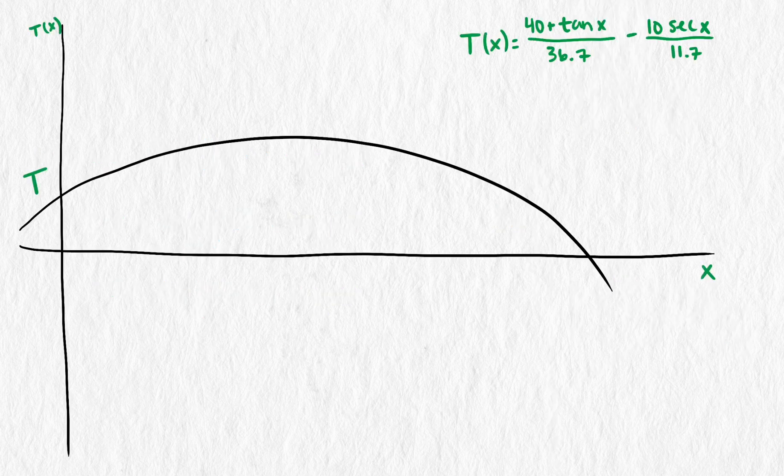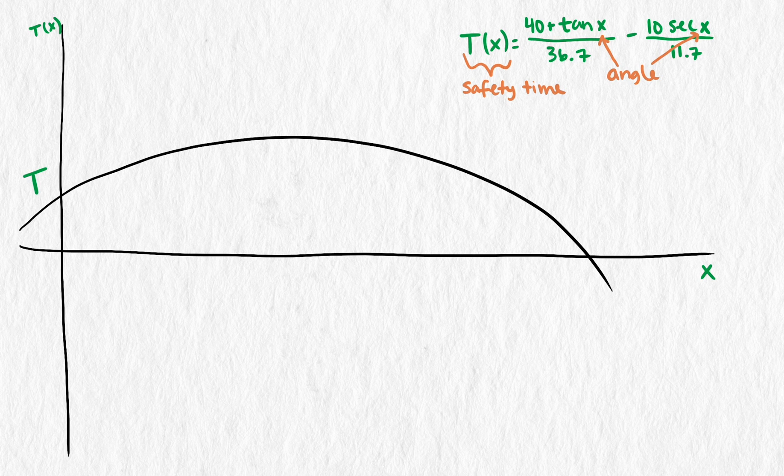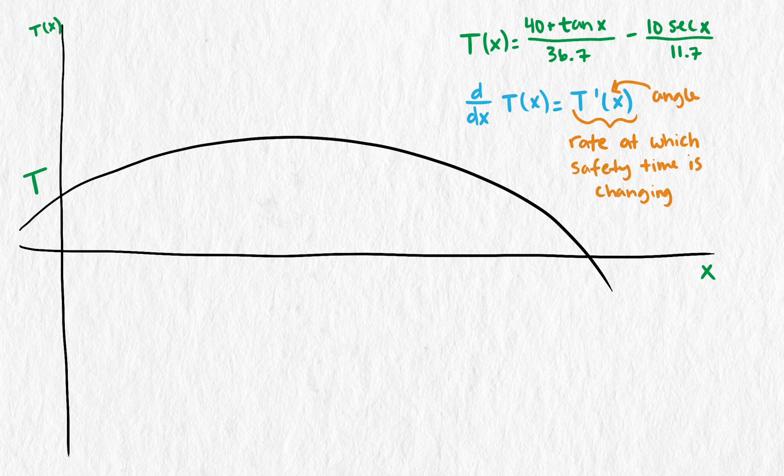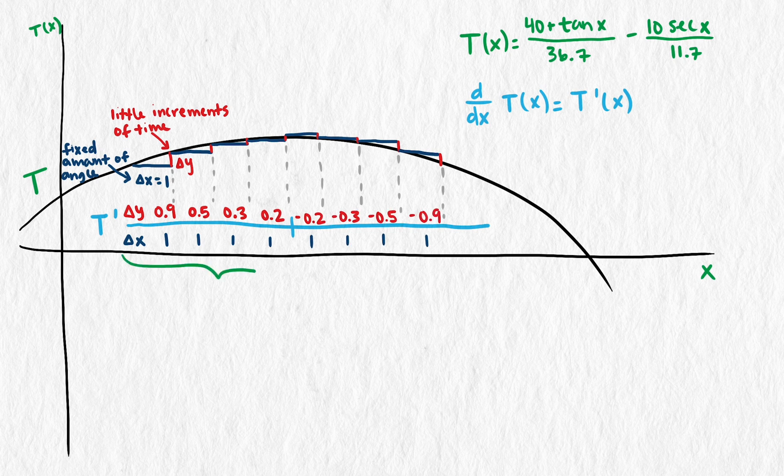We're starting with a function that has an angle as an input and the amount of safety time as the output. But the derivative of this function is another function that outputs the rate that the safety time is changing at any angle. When the rate is positive, the pedestrian is gaining time as the angle increases. When the rate is negative, the pedestrian is losing time as the angle increases.